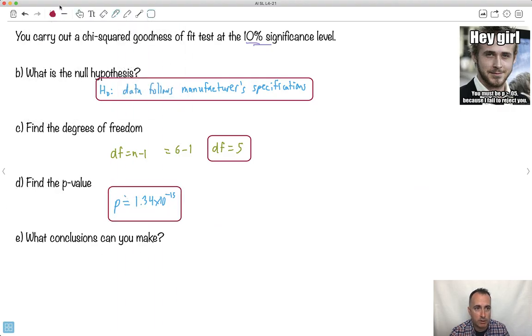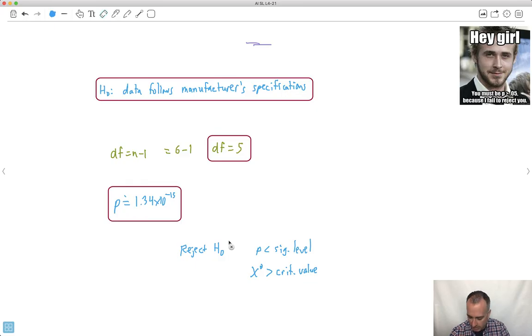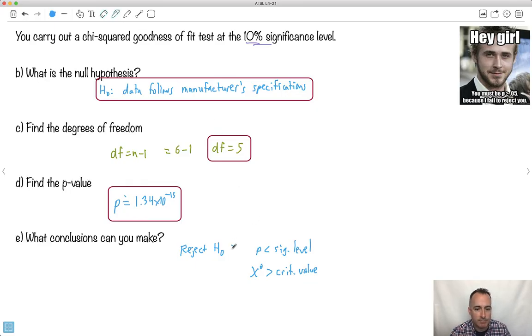So now I'm almost done. What conclusions can I make? Remember what I should conclude? Reject H0 if p-value is less than the significance level or if chi-squared is greater than the critical value. Hopefully I'm getting slightly annoying by always writing this down. That's because it's important. So we reject if this happens. Let's just double-check. Do I know the critical value? I don't, so that's why I ignore that number. But I'm going to reject if p is 1.34 times 10 to the minus 15. Is that smaller than the significance level of 0.1? And the question is, yes, it is.